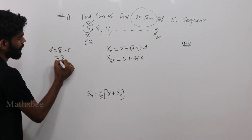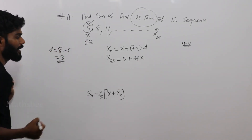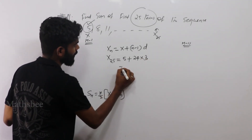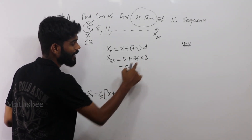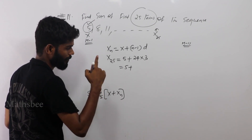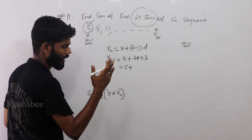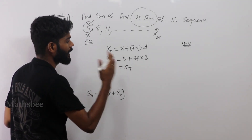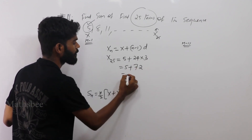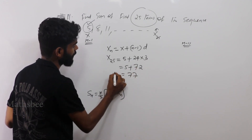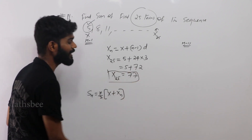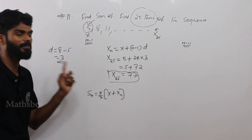So x25 = 5 + 72 = 77. That gives us x25 = 77.